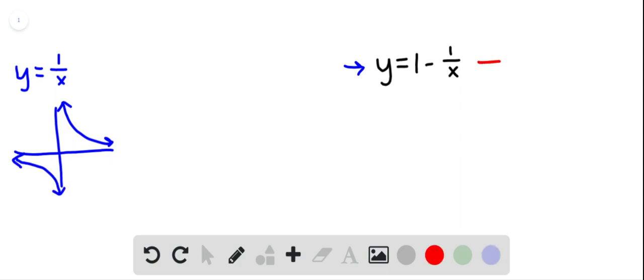Now what would we do with this function, with y equals 1 over x, to get the function we're interested in? Well I'm going to rewrite the function I'm interested in in a slightly different way. I'm going to rewrite it as y equals the opposite of 1 over x plus 1. I just rearranged the order of the terms.